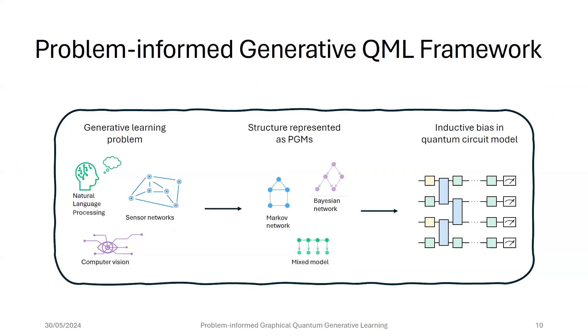So the general framework would be something like starting from a generative learning problem, we represent the structure of the problem using a probabilistic graphical model, such as Bayesian networks or Markov networks, and we use that same graph to construct the ansatz.